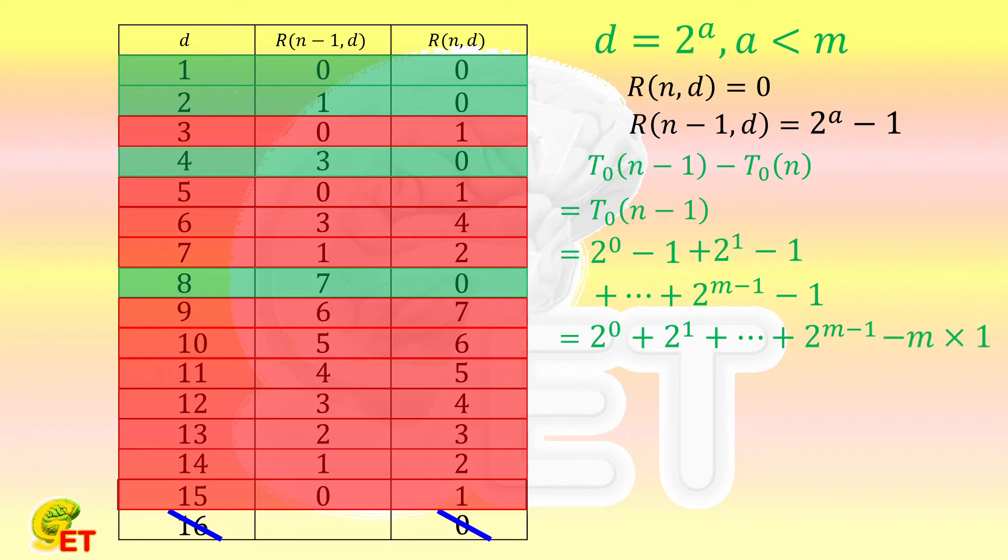If we know how to calculate the summation of a geometric sequence, we can write it directly as 2 to the m-th power minus 1. Well, it doesn't matter if we don't know it. We can briefly demonstrate how to calculate it here. We name this summation as x. And then we multiply each term by 2 to get that twice x equals 2 plus 4, all the way up to 2 to the m-th power. Then we subtract x from this 2x. Except for the term of 1 and the term of 2 to the m-th power, all the other terms are gone. So x is indeed equal to 2 to the m-th power minus 1. Then the result is equal to 2 to the m-th power minus 1, and then minus m.